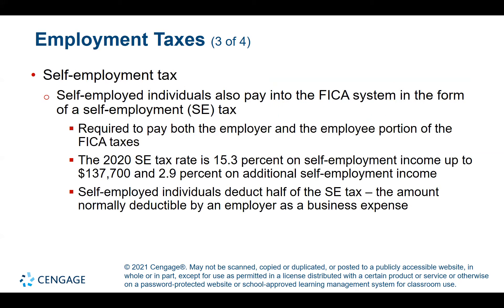Self-employed individuals pay FICA through a self-employment tax (SE tax), and are required to pay both the employer and employee portions. In 2020, the self-employment tax rate was 15.3% on self-employment income up to $137,700, and an additional 2.9% on income above that amount. However, self-employed individuals can deduct half of the self-employment tax — the employer portion — as a business expense.